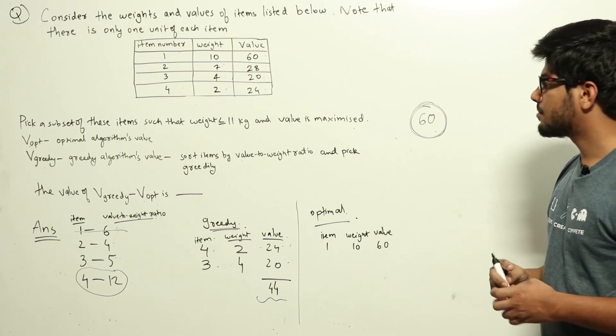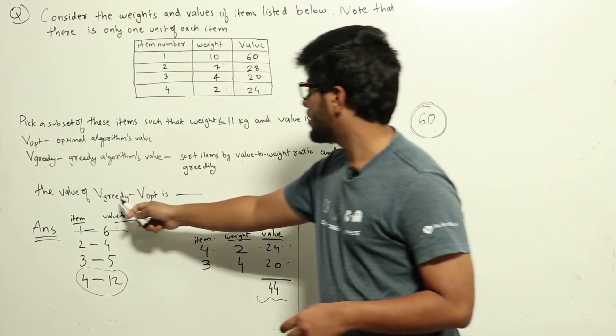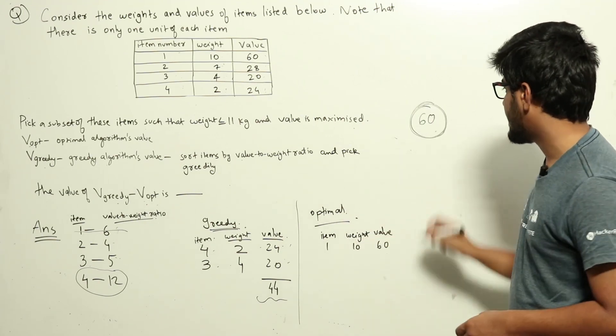60 is the value given by the optimal algorithm. So in the question they are asking V_greedy minus V_optimal. That is 44 minus 60... wait, V_optimal is 60 and V_greedy is 44, so the answer is 60 minus 44, which equals 16.